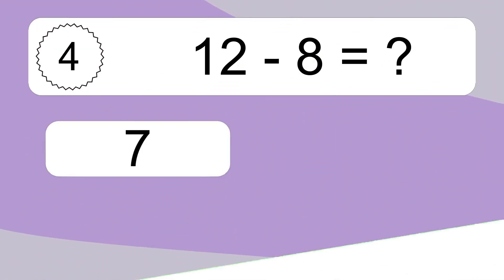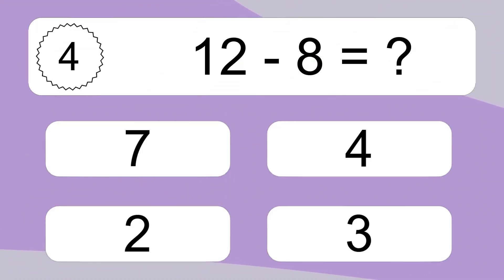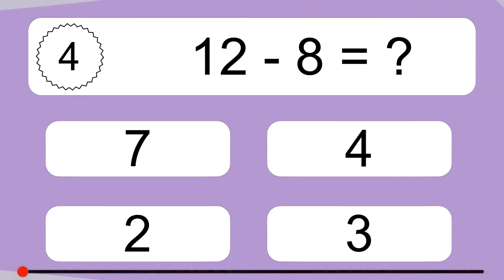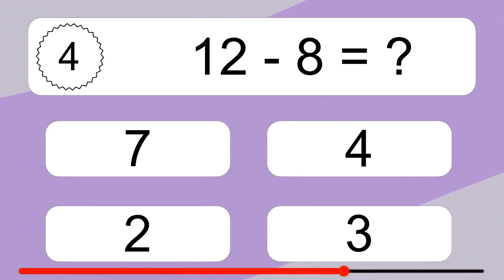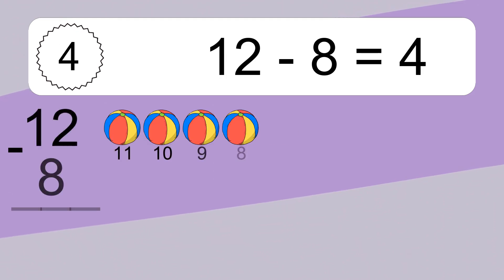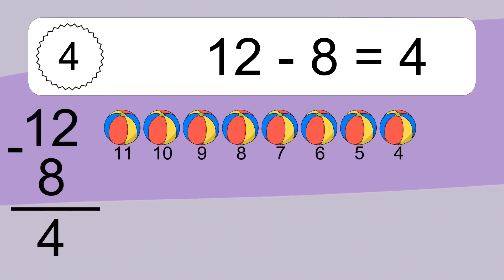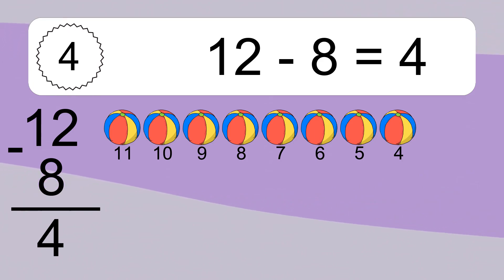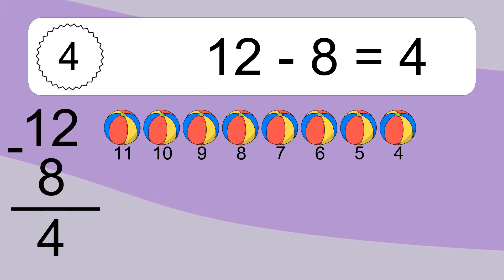12 minus 8 equals what? 12 minus 8 equals 4. Let's count it. 11, 10, 9, 8, 7, 6, 5, 4.